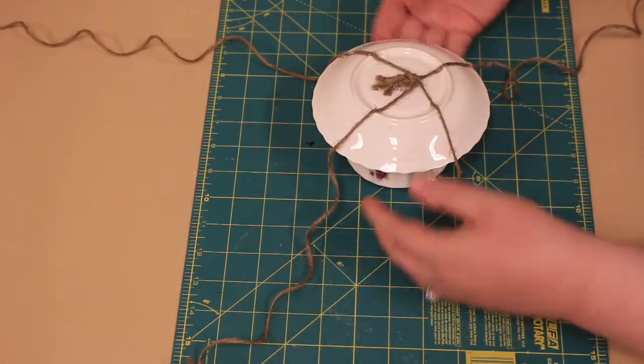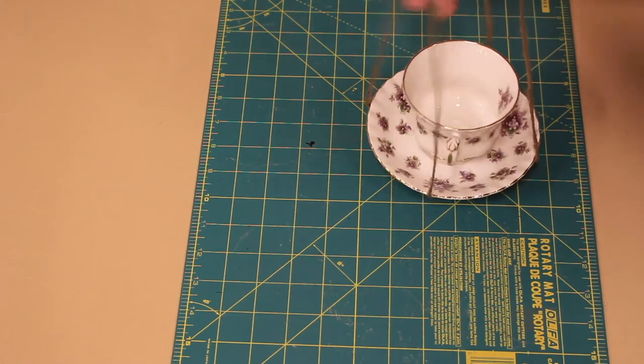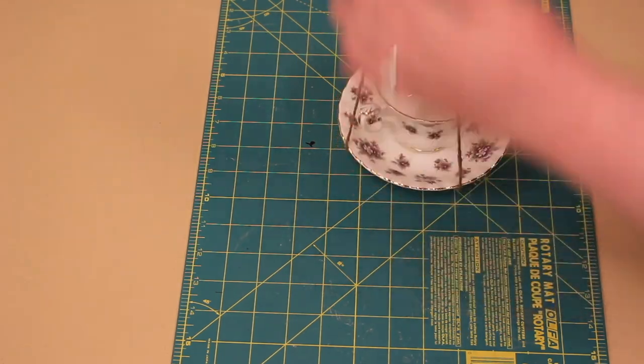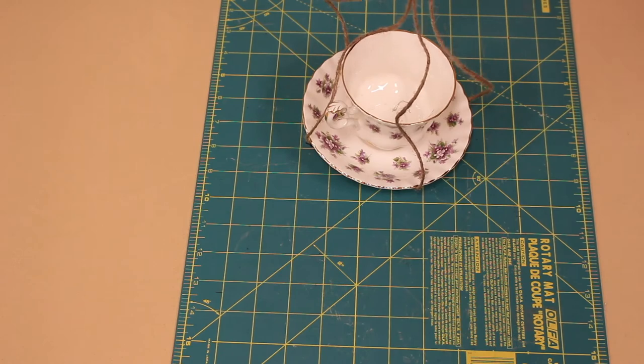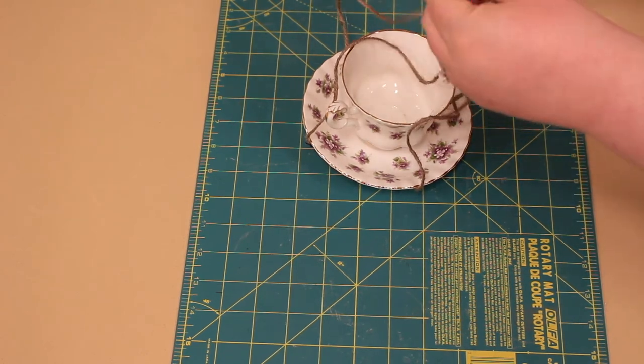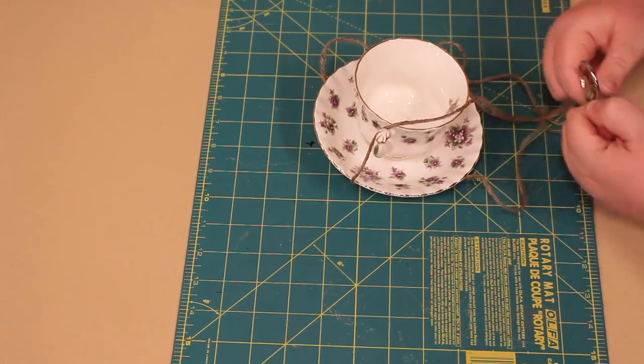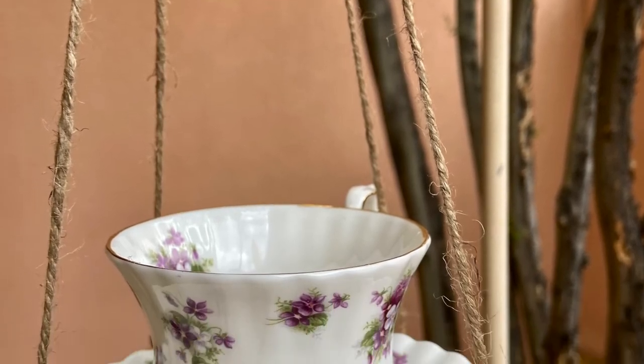Take the four strands of twine and gather them above the teacup. Holding the weight of the teacup and saucer, adjust the four strands until the saucer perfectly hangs level. Then tie the four strands together in a knot above the teacup. Add a ring to the knot to be able to easily hang the bird feeder later. And voila, our beautiful teacup bird feeder is finished.